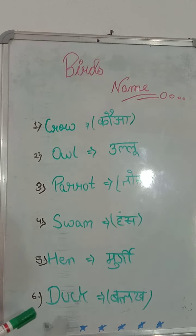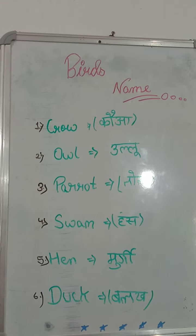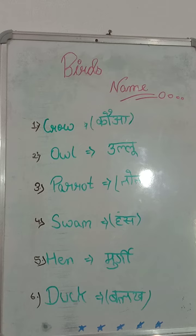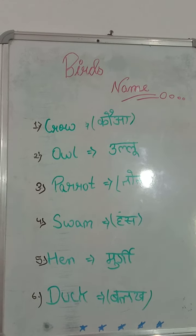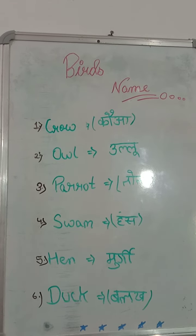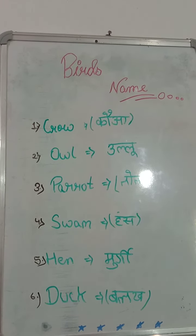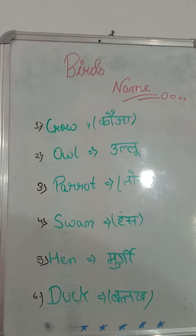Now let's move on to the sixth bird — the Duck — D, U, C, K. The duck is considered a rare and endangered animal. You can see the duck near water views.